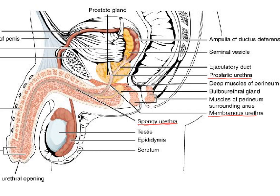The prostatic urethra is the portion still within the prostate — hence the name prostatic. Then we have a very short region called the membranous urethra, which is in between the prostate and the beginning of the penis, which we call the bulb — really just this little section here.